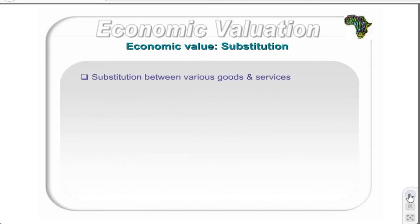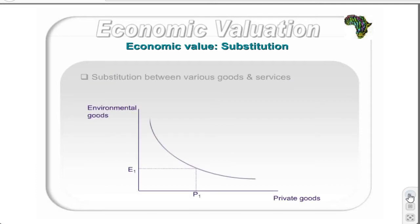The basis of standard welfare theory rests on the ability to substitute between various goods and services. The figure shows an indifference curve where environmental and private goods are traded to maintain the same level of utility. This curve shows a range of trade-off ratios and individual preferences between these two types of goods. For instance, an individual initially had P1 private goods and E1 environmental goods. In order to accept the decline of private goods to P2 and maintain the same utility, he or she will increase environmental goods to E2. The value measures placed on these trade-offs are known as willingness to pay and willingness to accept compensation.